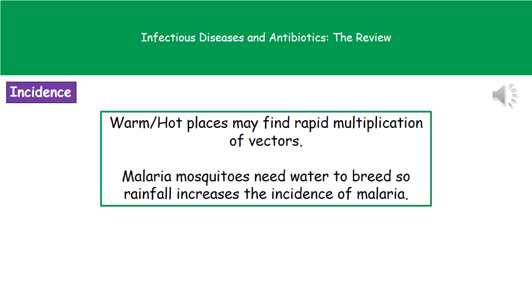Considering climate first: in warm or hot places, vectors can multiply quite rapidly. More vectors means more disease spread from person to person, so we see an increase in incidence. For example, malaria mosquitoes need water to breed, so during periods of increased rainfall the incidence of malaria increases, because the standing water allows mosquitoes to breed and spread malaria to more people.